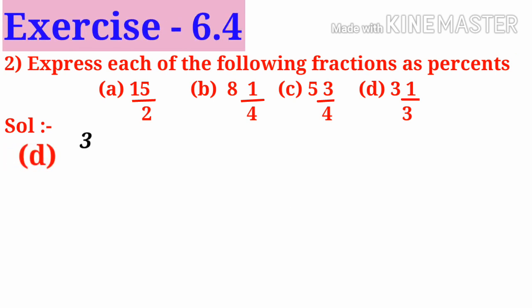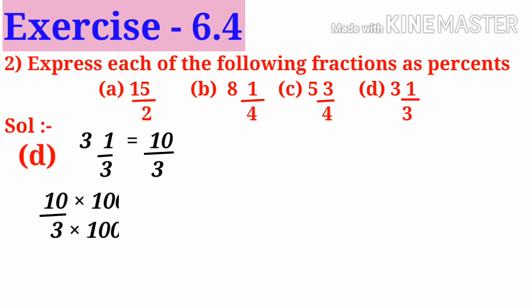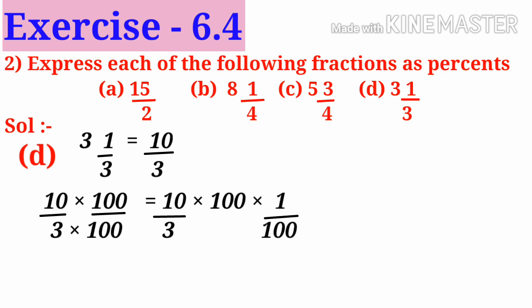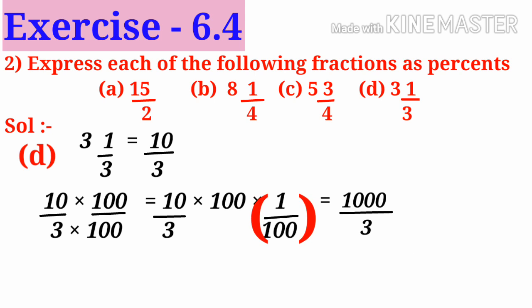D: 3 and 1 by 3. Convert it into an improper fraction: 3 times 3 is 9 plus 1, giving 10 by 3. Now multiply both numerator and denominator by 100, that is 10 by 3 into 100 into 1 by 100. Now 10 into 100 is 1000 by 3, and 1 by 100 is denoted by percent, so 1000 by 3 percent is the answer.